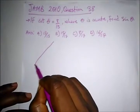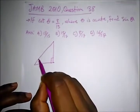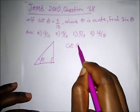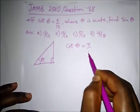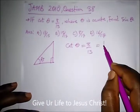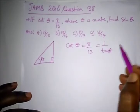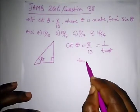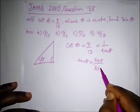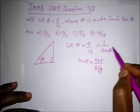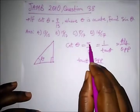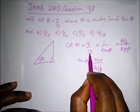Since θ is an acute angle, let's draw a right angle triangle with θ here. It says cot θ is equal to 8 over 15. If we remember, cot θ is the inverse of tan θ, and tan θ is opposite over adjacent, so cot θ will be adjacent over opposite.